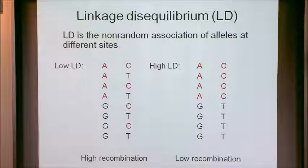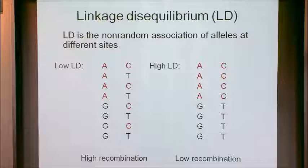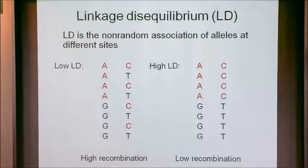Linkage disequilibrium is some way of quantifying the non-random association of alleles at different sites. Here the cartoon has each row as a two-site haplotype at a different chromosome. Low linkage disequilibrium is equivalent to cases where you have no association between alleles at the first and second sites. High linkage disequilibrium means you have some kind of correlation — here they're completely correlated, so that if you have an A allele at the first site, you always have a C at the second.